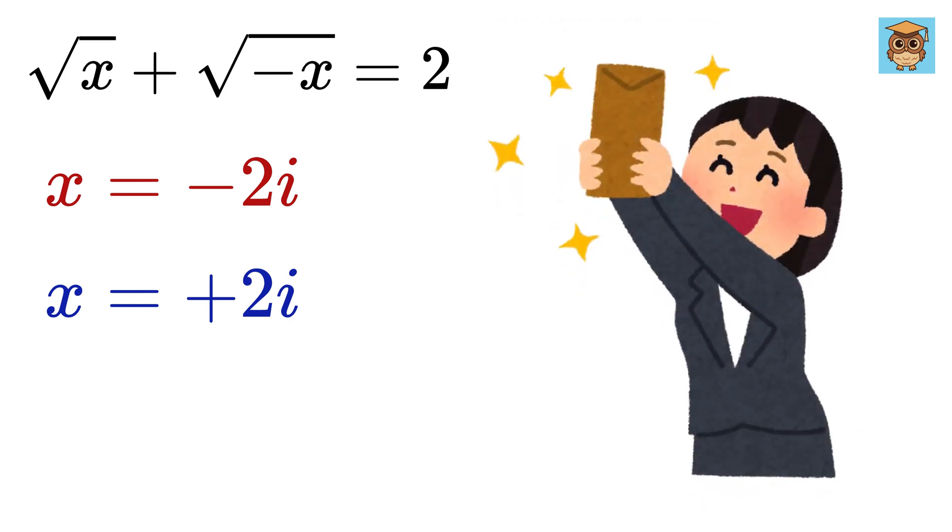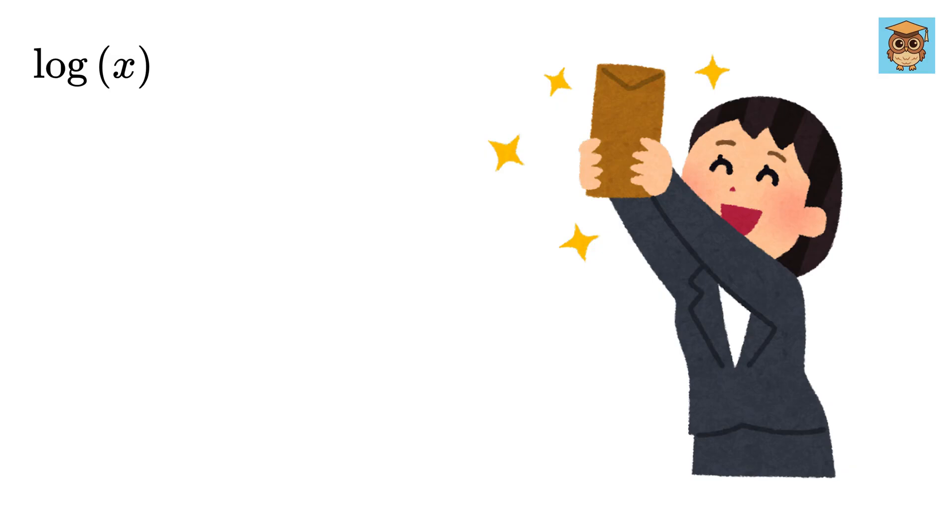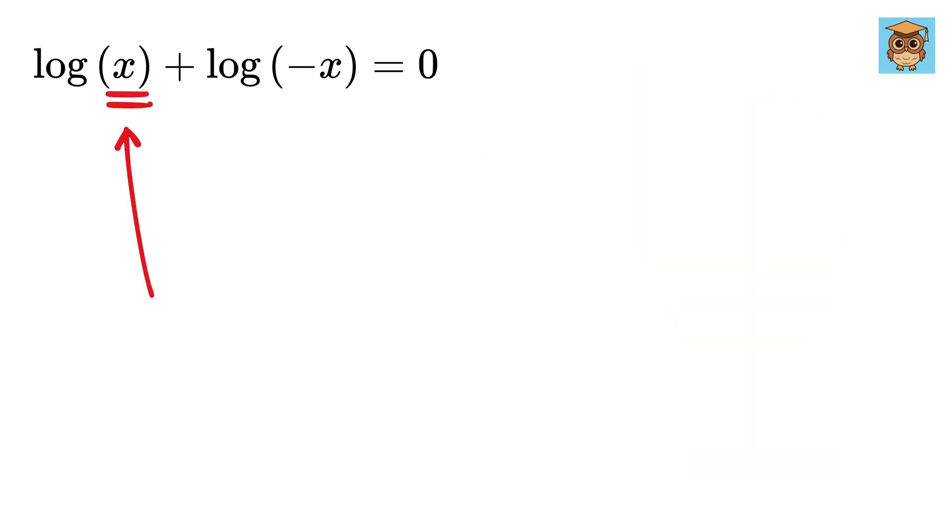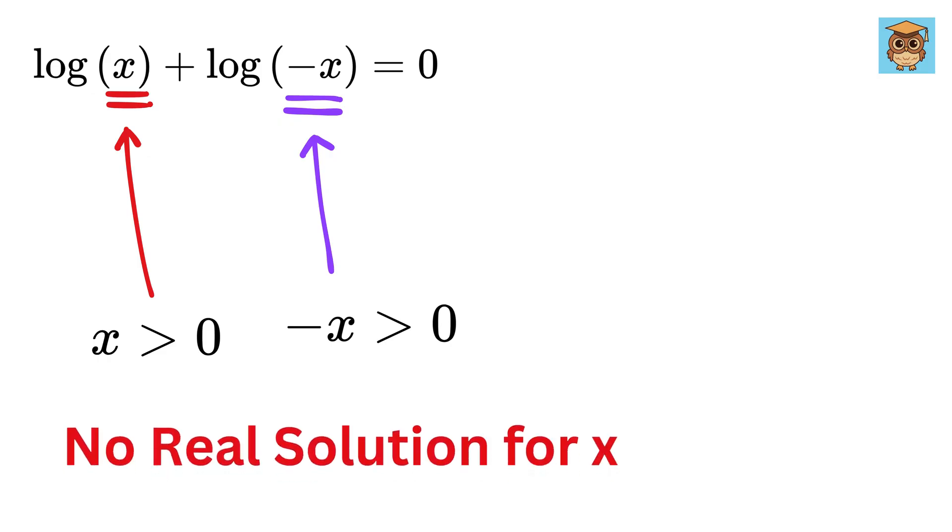Now, as a bonus, let us solve for the log of x plus the log of negative x equals 0. We all know that anything inside the logarithm must be greater than 0, so x must be greater than 0. But at the same time, negative x must also be greater than 0. Again, as you can see, we cannot have any real solution for x.